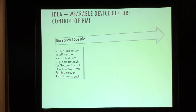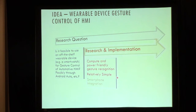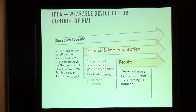Given all of that, it's a valid question to ask: can I take something like a wearable device like a smartwatch and use that for gesture control of an automotive system, maybe through Android Auto or Apple CarPlay? This is a research question I set out to answer. I did some research and an implementation around that, and this talk is really about the learnings from that. As far as the original research question goes, what I concluded was yes, it seems feasible — there's something there that can work, but it requires more refinement and testing.